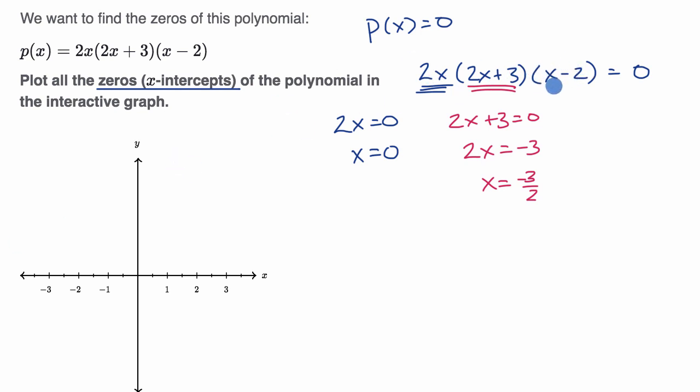And then last but not least, x-2 could be equal to zero. That would make the whole product equal to zero. So what x-value makes x-2 equal zero? We'll add two to both sides, and you would get x is equal to two. If x equals two, that equals zero. Doesn't matter what these other two things are. Zero times something times something is going to be equal to zero.